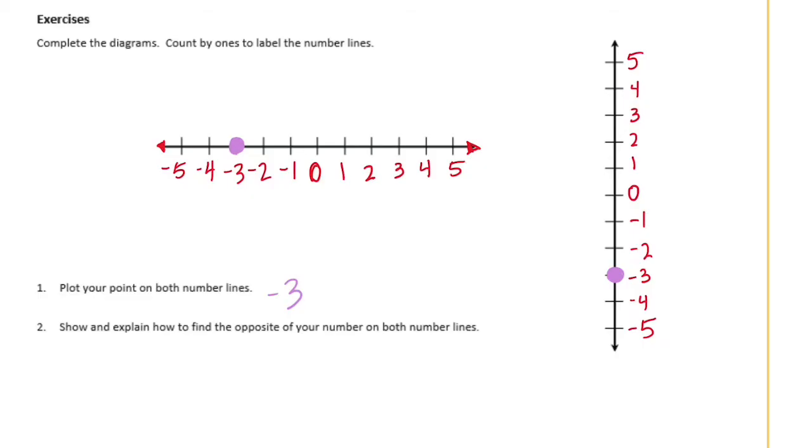And then it says number 2, show and explain how to find the opposite of your number on both number lines. So the opposite of negative 3 would be if we were to go to 0, we moved 1, 2, 3. So then if I moved up 1, 2, 3 again, the opposite of my number would be 3. So again, if I started at negative 3 and went to 0, then I'd have to do the same distance to get to 3. So we showed it, now let's explain it.